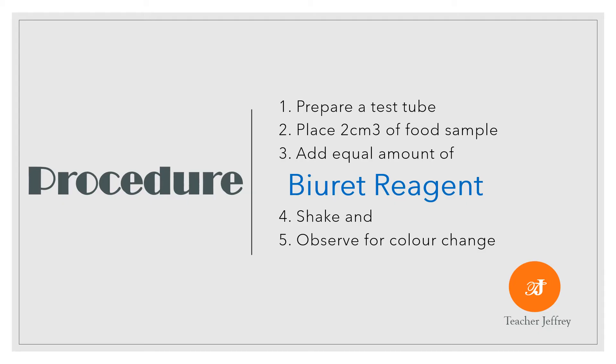Here is our procedure. 1. Prepare a test tube. 2. Place 2 cubic centimeters of food sample into the test tube. 3. Add equal amount of Biuret reagent. 4. Shake to mix. And 5. Observe for color change.